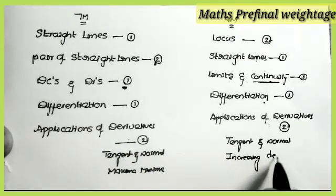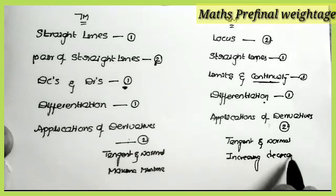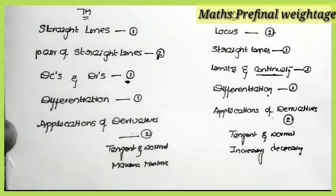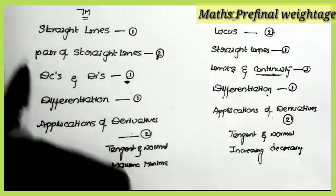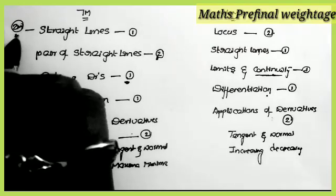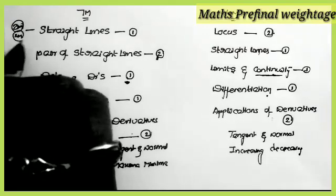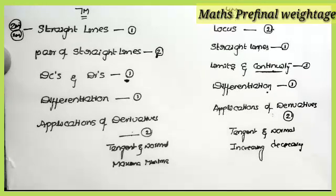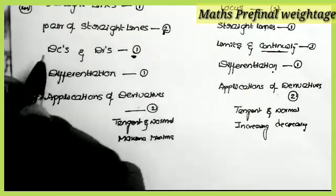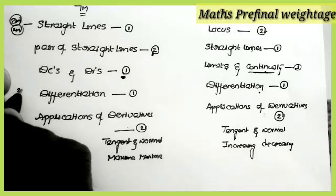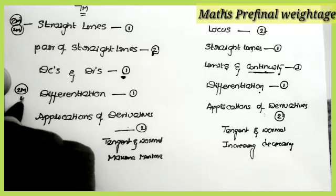So this is the Maths 1B weightage for four-mark and seven-mark questions. Now coming to the two-mark questions from Maths 1B. From Straight Lines: 2 two-mark questions. From Pair of Straight Lines: no question. From 3D Coordinates and Direction Cosines: no two-mark question. From Differentiation: 2 two-mark questions.